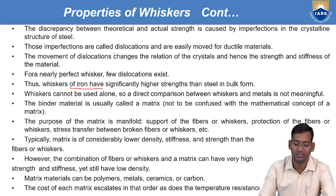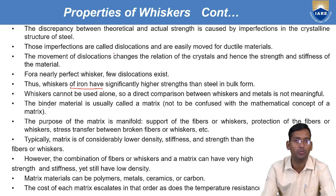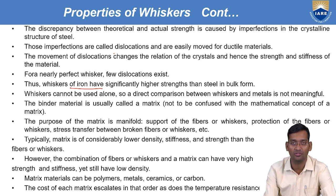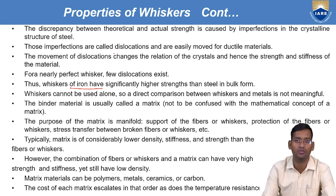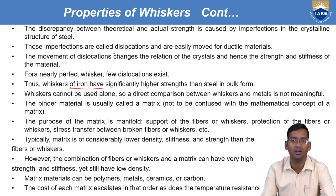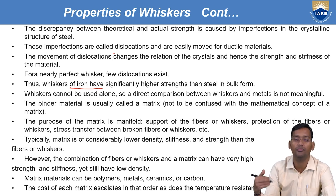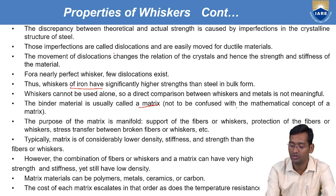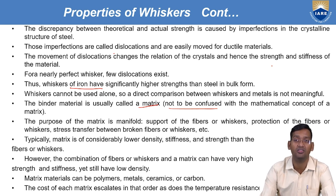Whiskers cannot be used alone — just like fiber, fiber cannot be used alone; some matrix is required. Similarly, whiskers also cannot be used alone; for that also, some external matrix is required. So a direct comparison between whiskers and metal is not meaningful — we cannot use whiskers directly, and therefore we cannot compare them directly with metals either. The binding material is usually called a matrix — not to be confused with the mathematical concept of a matrix.